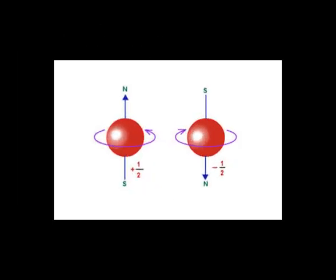One view of electrons proposed by quantum physics is that they are particles, each with their own spin. The electron can spin clockwise and counterclockwise, and therefore be assigned a particular M sub S quantum number: plus one-half or minus one-half.